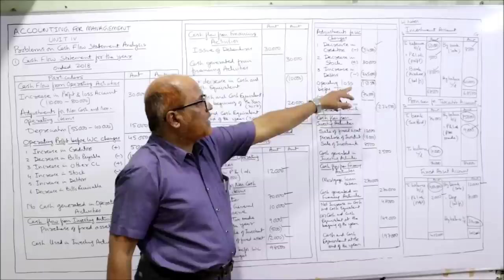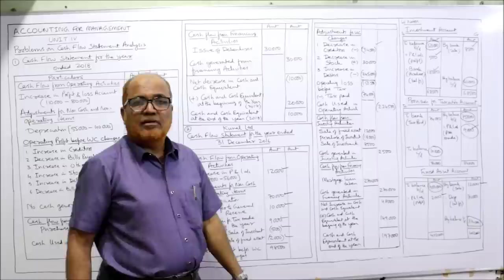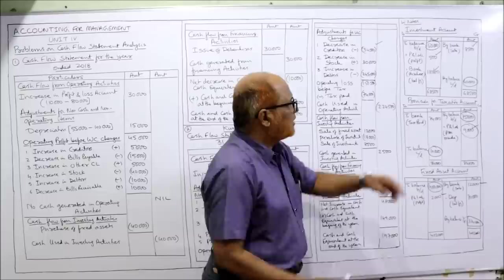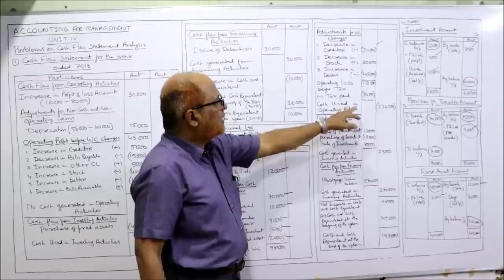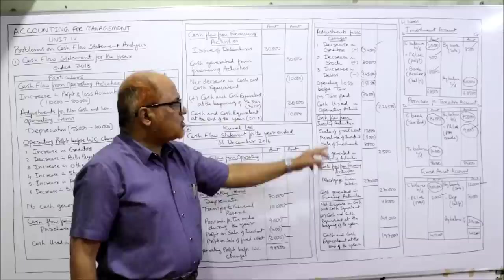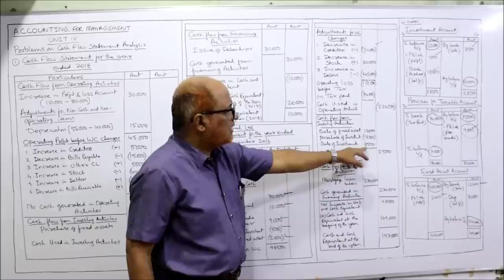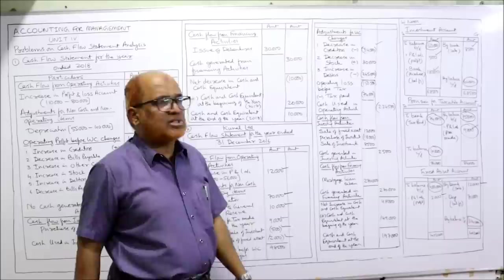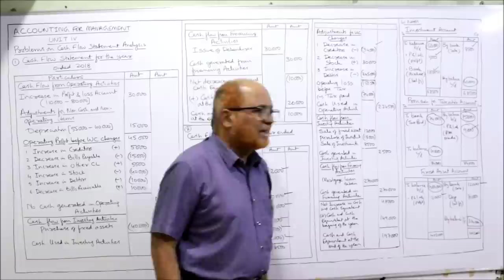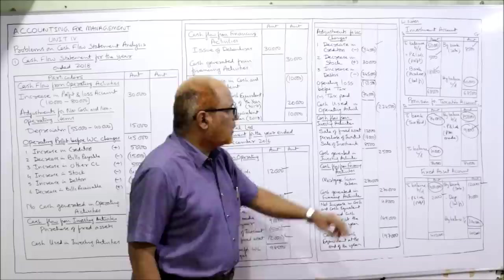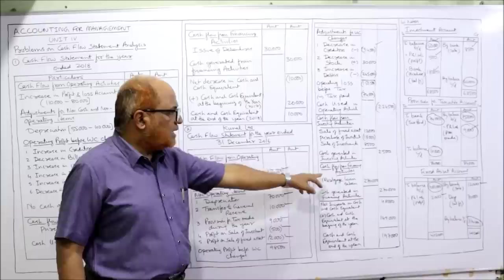Now cash flow from investing activity. Sale of investment: 8,500 — positive. Purchase of investment: 18,000 — cash outflow, in bracket. Sale of fixed asset: 12,000 — positive. Total: 8,500 minus 18,000 plus 12,000 equals 2,500 — cash generated from investing activity. Now cash flow from financing activity: only one item. Share capital — no change at all. Mortgage loan: last year nil, current year 2,70,000 — during the year the company took a mortgage loan.